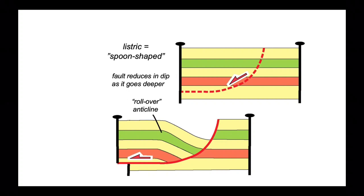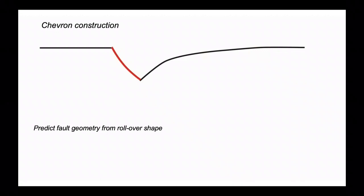There's a predictable relationship between the shape of this anticline and the shape of the fault. This was explored by the Chevron oil company, and they give their name to a construction technique. The ambition is to predict the fault geometry from the shape of the rollover anticline. Here we have a line drawing in cross section of a bed in black and a fault in red. Let's imagine we're trying to interpret some seismic data that is rather poorly imaged at depth.